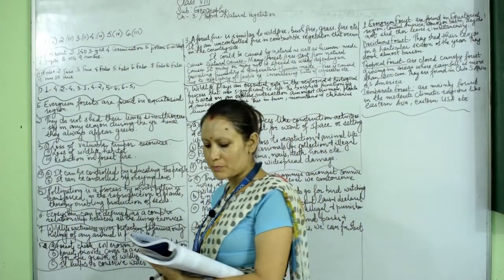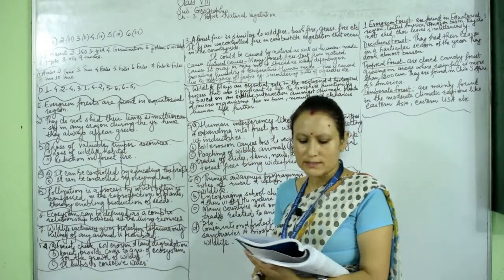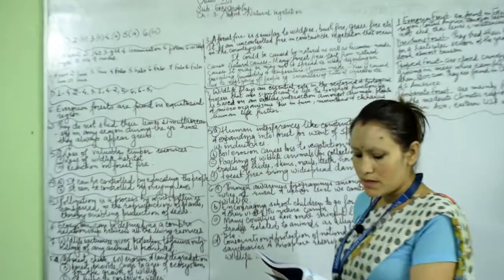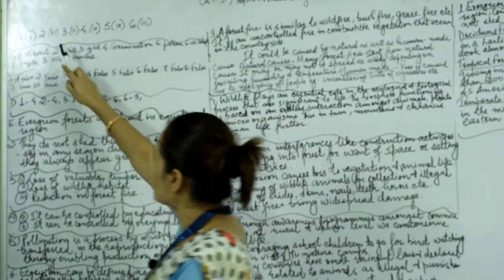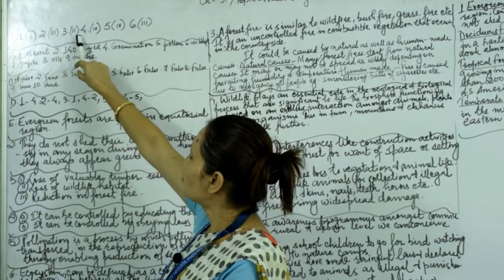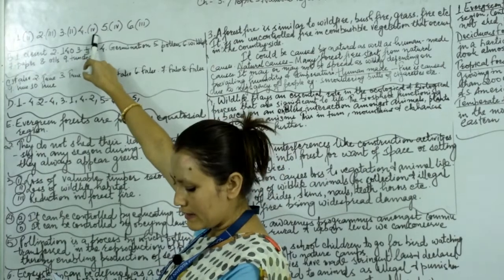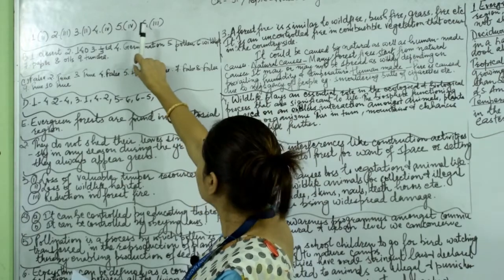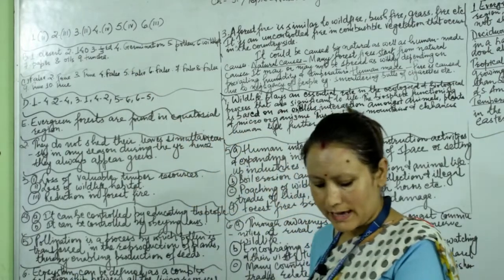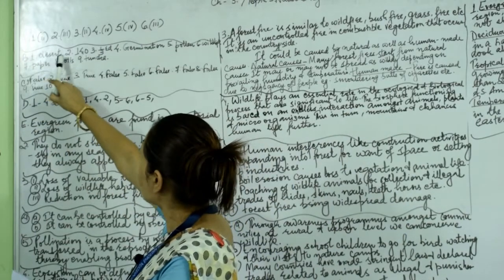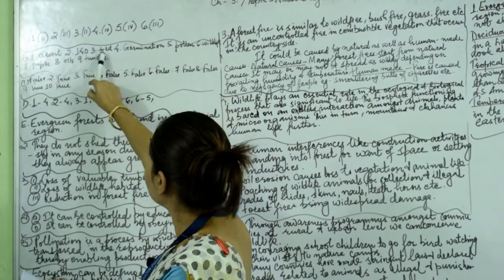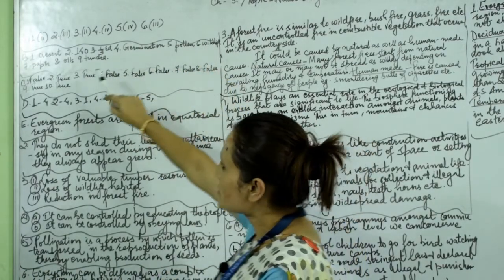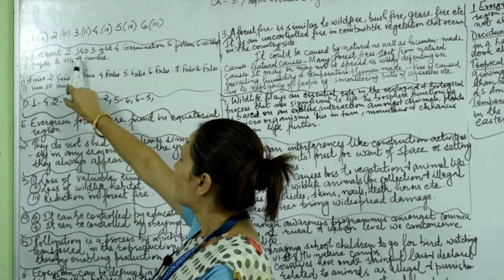Let's do the exercise of the same chapter. Choose the correct option: number one — answer is two (Tundra regions); number two — answer is three (deciduous); number three — number two; number four — number four; number five — number four; and number six — number three. Fill in the blanks: one: desert; two: 140; three: one-third; four: germination; five: pollen; six: wildlife; seven: paper; eight: oils; nine: tundra.